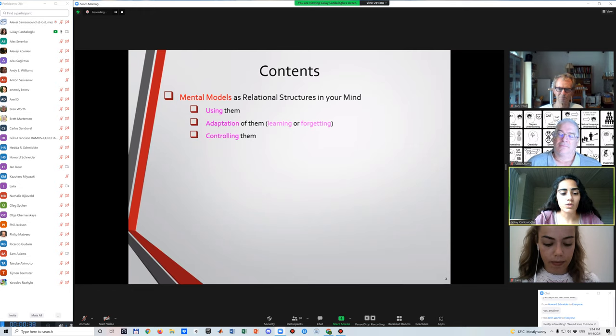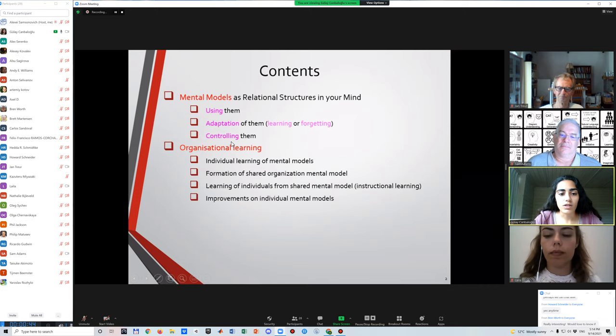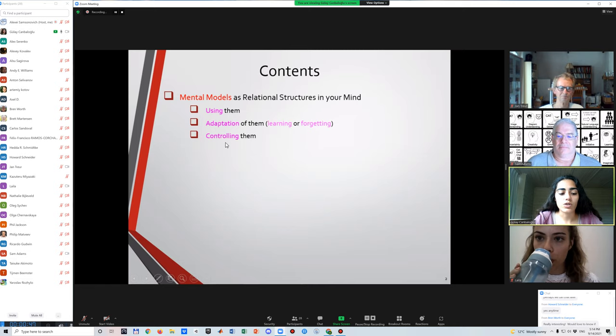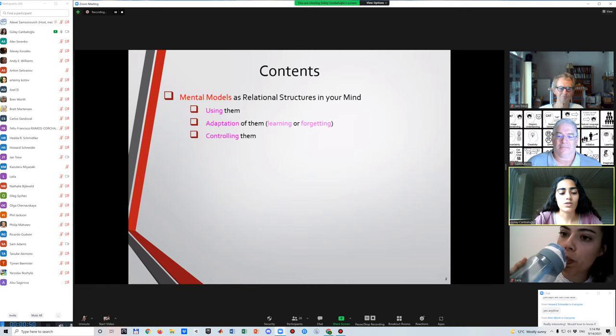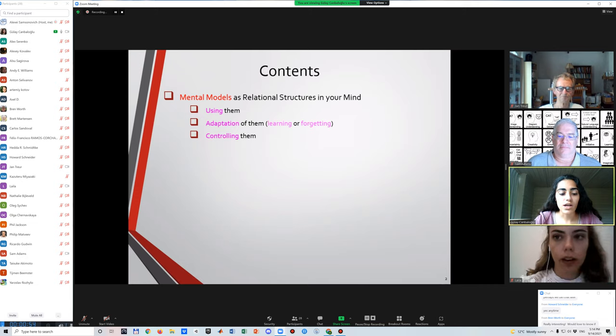When we talk about mental models, three concepts come to our minds: usage, adaptation and control. Having knowledge or even having only an image of a thing or a task or an abstract concept is the usage of mental models. We have the inner representations of the outer world in our minds, and adapting these representations means gaining or losing knowledge on them. Learning is strengthening the connections of the mental models and forgetting is weakening them. We have the ability to control this adaptation, for instance by doing mental exercises. Controlling is mainly about the speed and persistence of the learning and forgetting.